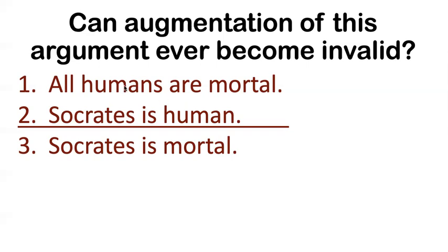All you can do is make the argument invalid by taking something away. If I change these premises, I could make it invalid — I just have to delete one of these premises and it's no longer valid. Or if I change my conclusion, the argument might be invalid. But what I cannot do is just add information. That's how deductive validity, this 100% guarantee, works.